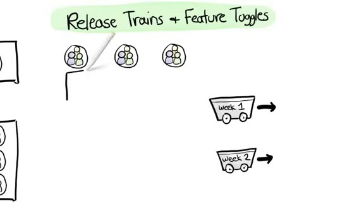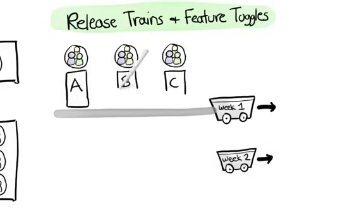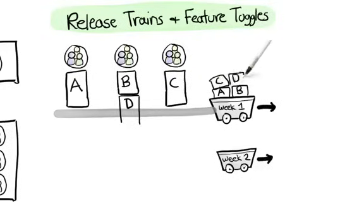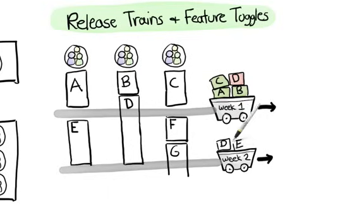Suppose these three squads are building stuff and when the next release train arrives, features A, B, and C are done while D is still in progress. The release train will include all four features, but the unfinished one is hidden using a feature toggle. It may sound weird to release unfinished features and hide them, but it's nice because it exposes integration problems early and minimizes the need for code branches. Unmerged code hides problems and is a form of technical debt.